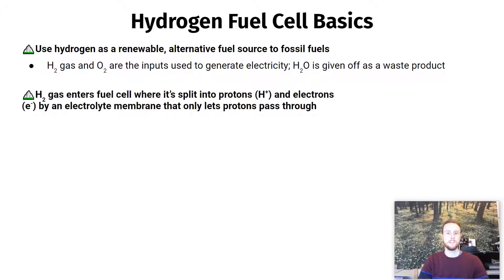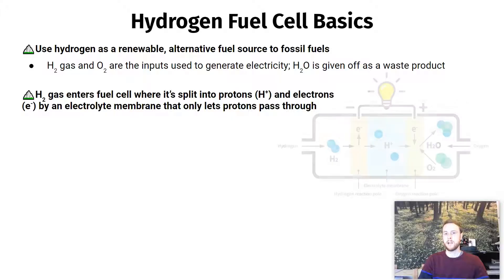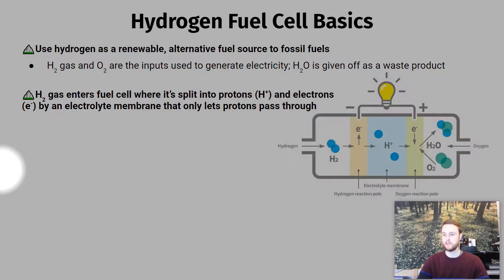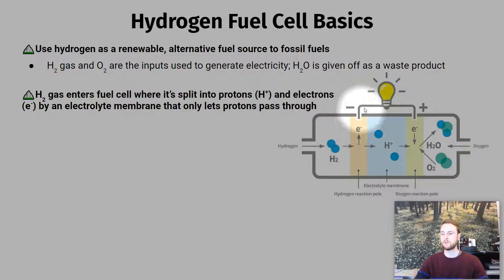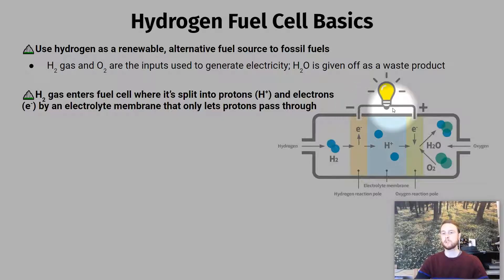Let's look at how this process actually works. Hydrogen fuel — H2 gas — enters the fuel cell and hits the hydrogen reaction pole, where the electrons are separated from the protons. The protons can pass through the membrane, but the electrons have to take an alternate path around — we call this a circuit. The flow of electrons is an electrical current, and so that can power a device: a light bulb, a car, or anything that requires electricity.